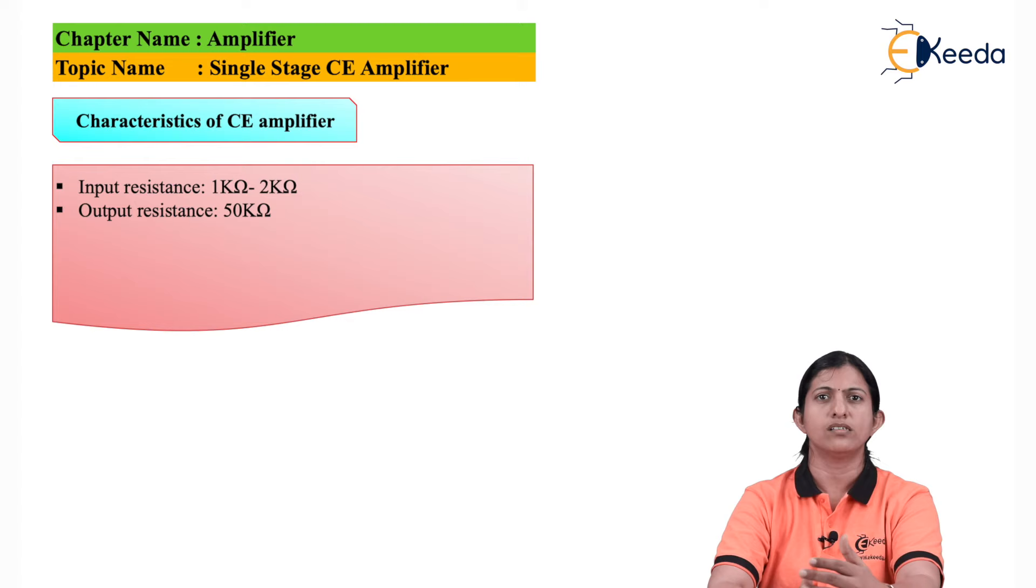The current gain is 50 to 100 and voltage gain is 1500. As we have already discussed, single stage CE amplifier produces the phase shift of 180 degrees between the input and the output signal without changing the nature of the input waveform.